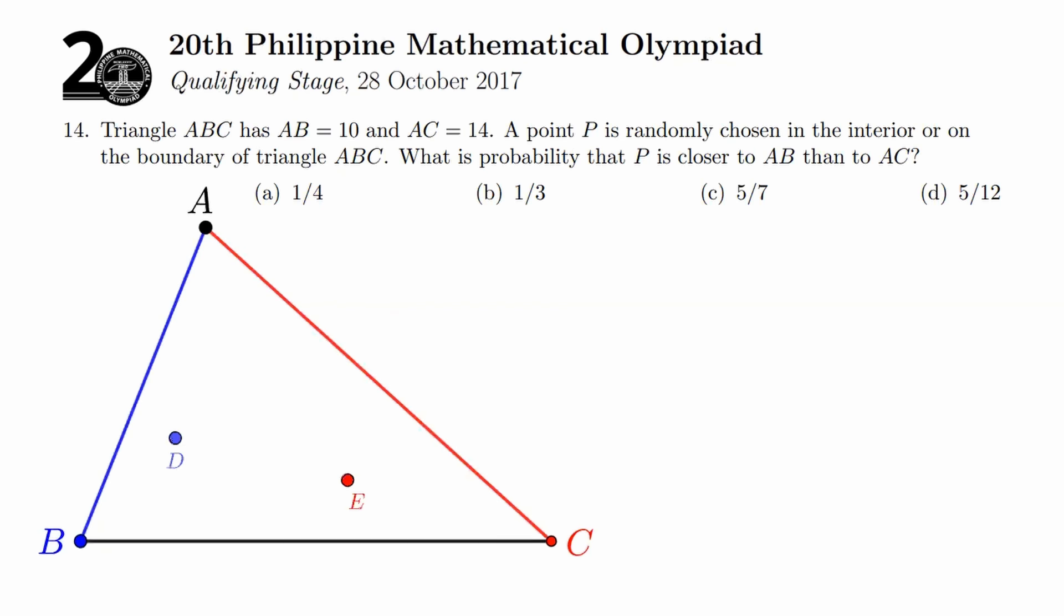First, let's explore. Here are two points, D and E. It's quite clear that D is closer to AB while E is closer to AC. But how do we capture this exactly, this idea that D is closer to AB and E is closer to AC? Because yes, if you have seen it, obviously, but mathematically, how do we capture that fact?